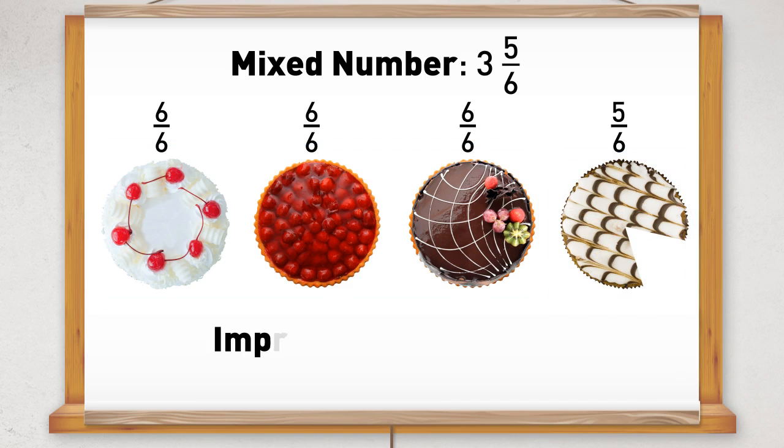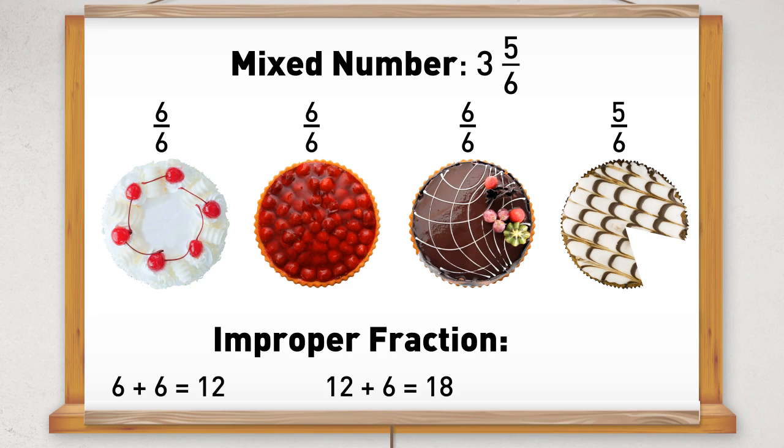Or we could write it as an improper fraction. We have 6 then another 6 which makes 12, then another 6 which is 18, then another 5. So we have 23 sixths. So as an improper fraction we can write it as 23 sixths.